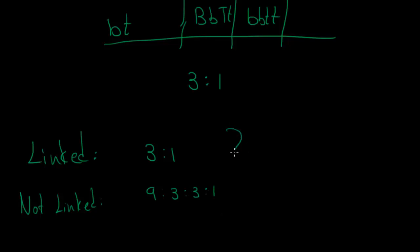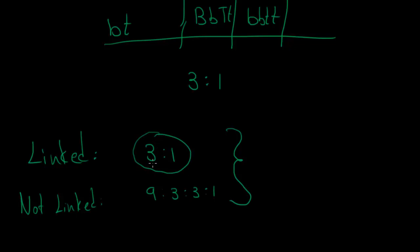So why are the ratios helpful? If you are given an exercise with a dihybrid cross and you know that crossing heterozygous parents for both traits should give 9:3:3:1 when unlinked, but the exercise gives you a 3:1 ratio instead, that tells you the genes are probably linked.